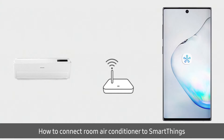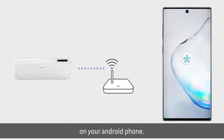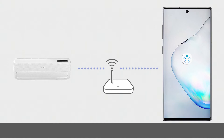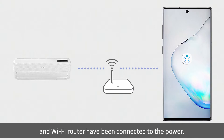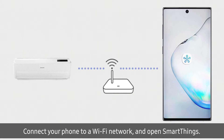How to connect the room air conditioner to SmartThings on your Android phone? First, make sure your air conditioner and Wi-Fi router are connected to the power. Connect your phone to a Wi-Fi network and open SmartThings.